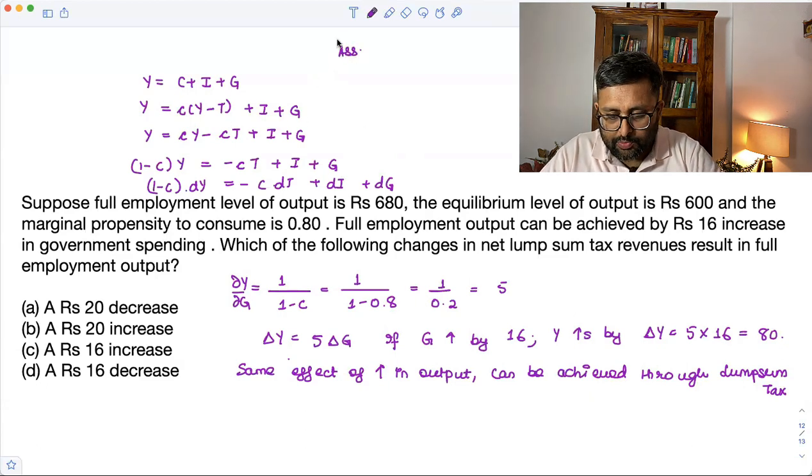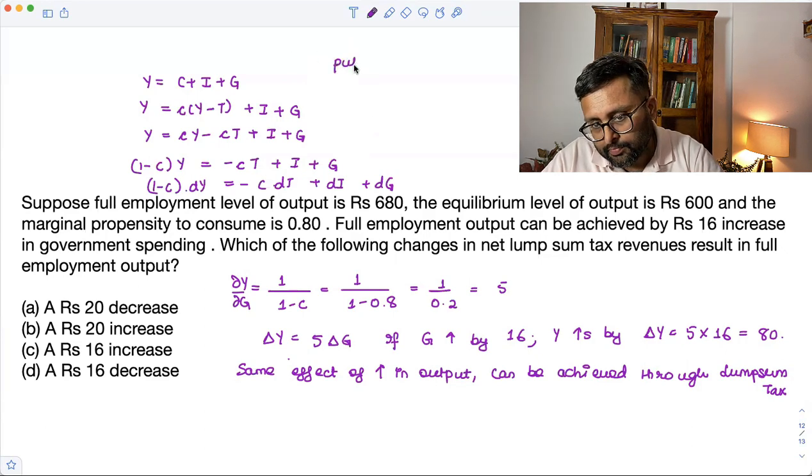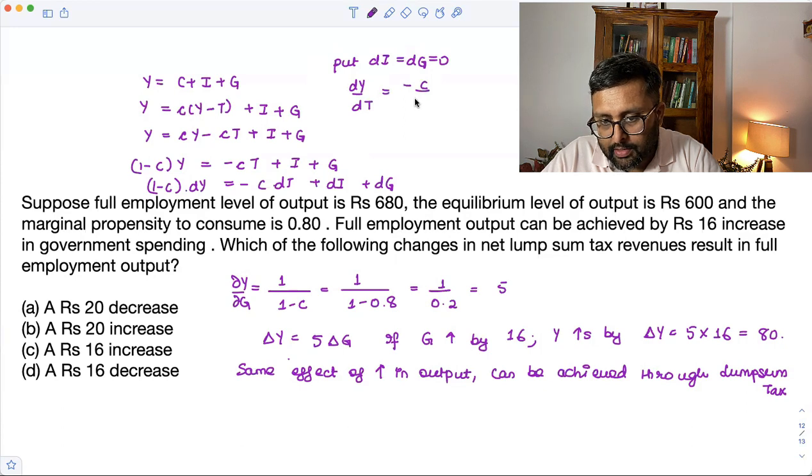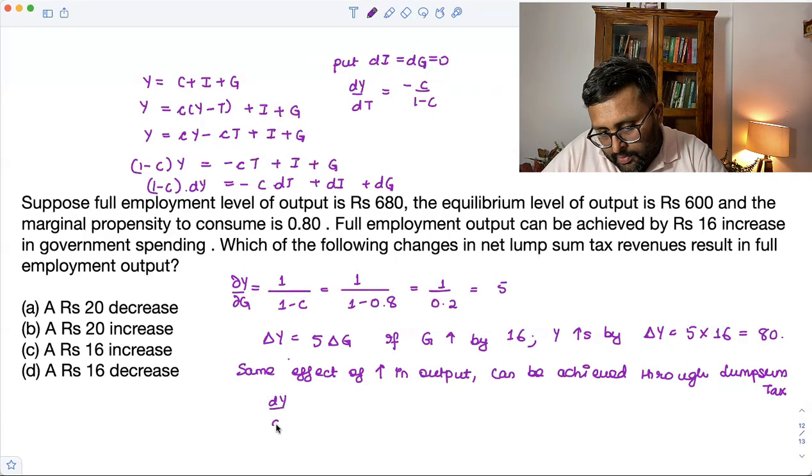just put dI and dG equal to 0. I am just writing the tax multiplier. So some of you might just skip this step because many of you would just know this. I am just writing this for everyone. So it is dY by dT is minus C upon 1 minus C, like this. Right, put out. So what you are saying is this. dY by dT is minus C upon 1 minus C. Okay.